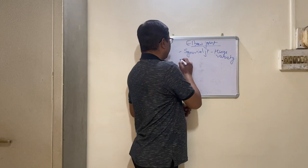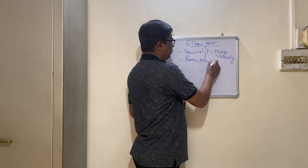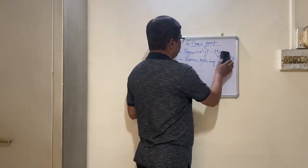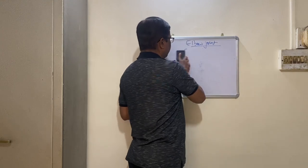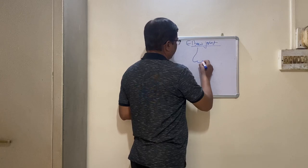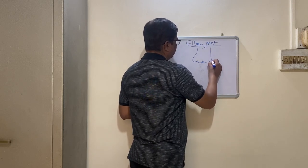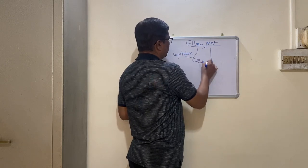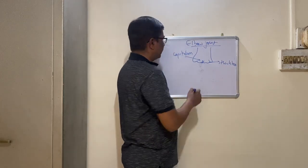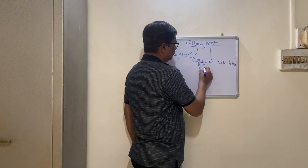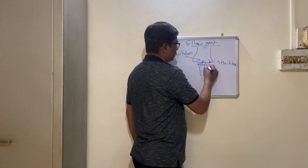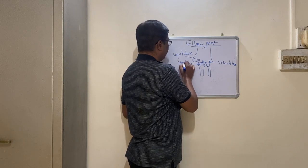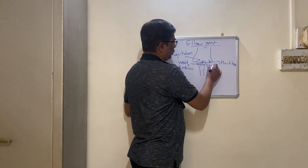The next point is bones taking part in the formation of the elbow. At the upper end you will have the capitulum and trochlea of the humerus. Inferolaterally you will have the head of the radius, and inferomedially you will have the trochlear notch of the ulna.